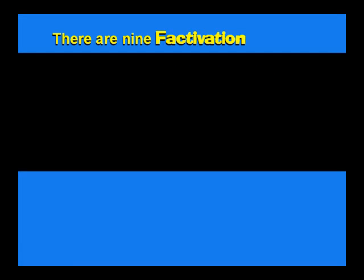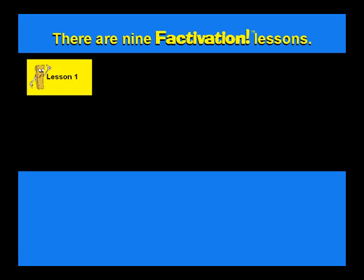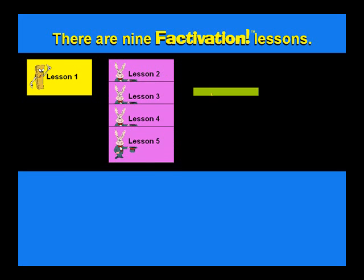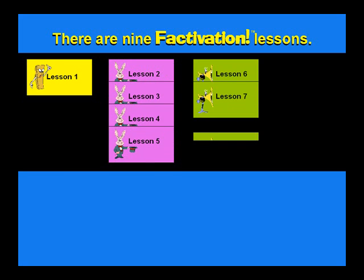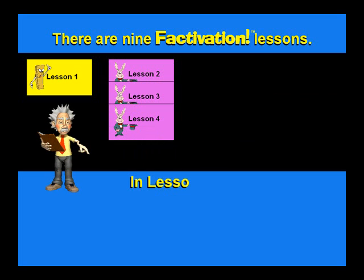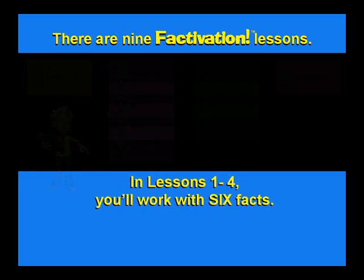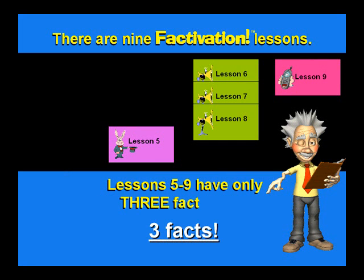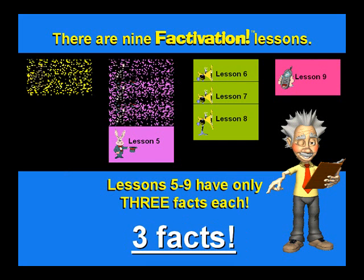There are nine factivation lessons. In lessons one through four, you'll work with six facts. Lessons five through nine have only three facts each.